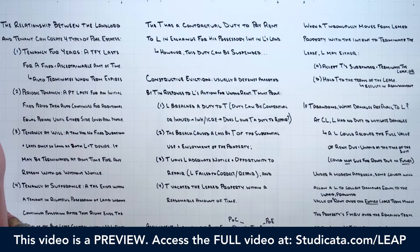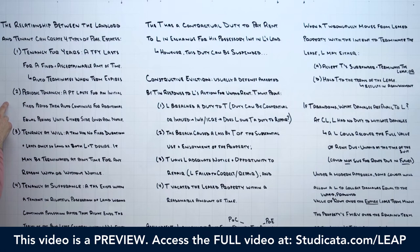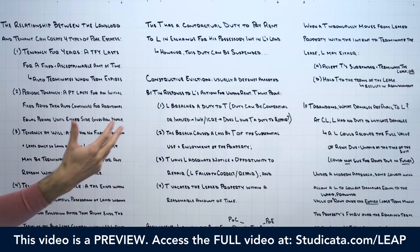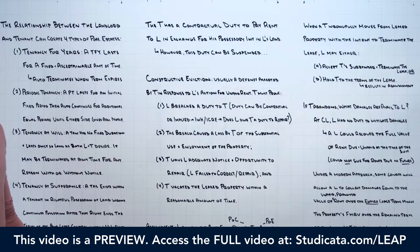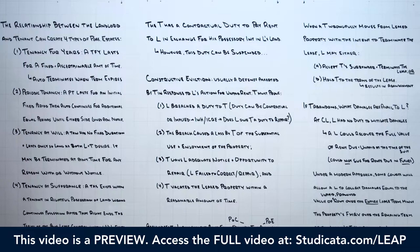Next, we have the periodic tenancy. A periodic tenancy lasts for an initial fixed period, then automatically continues for additional equal periods until either side gives advanced notice. Most classically, this is a month-to-month lease. Unlike a tenancy for years, the key distinction here is that to terminate the landlord-tenant relationship, one side — either the landlord or the tenant — has to give advanced notice. The tenancy is going to terminate on the last day of the fixed period, meaning a periodic tenancy cannot end in the middle of a period.